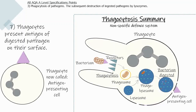Once the pathogen is surrounded by cytoplasm and held within a phagosome, the lysosome fuses with it, exposing the pathogen to the hydrolytic lysozyme enzymes. The lysosome hydrolyzes the pathogen, and any useful soluble molecules are absorbed into the phagocyte's cytoplasm. The phagocyte then presents the antigen of the digested pathogen on its surface, and is now called an antigen-presenting cell.